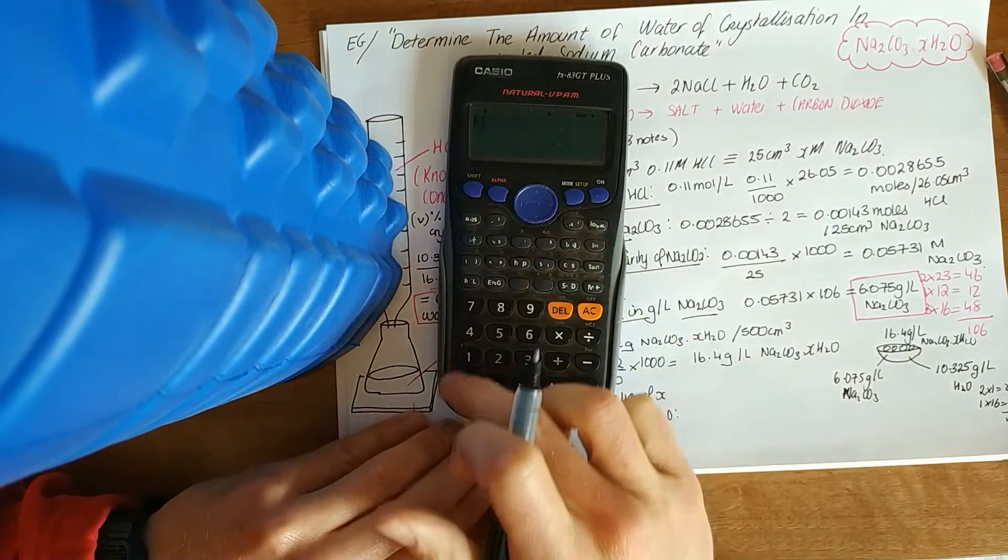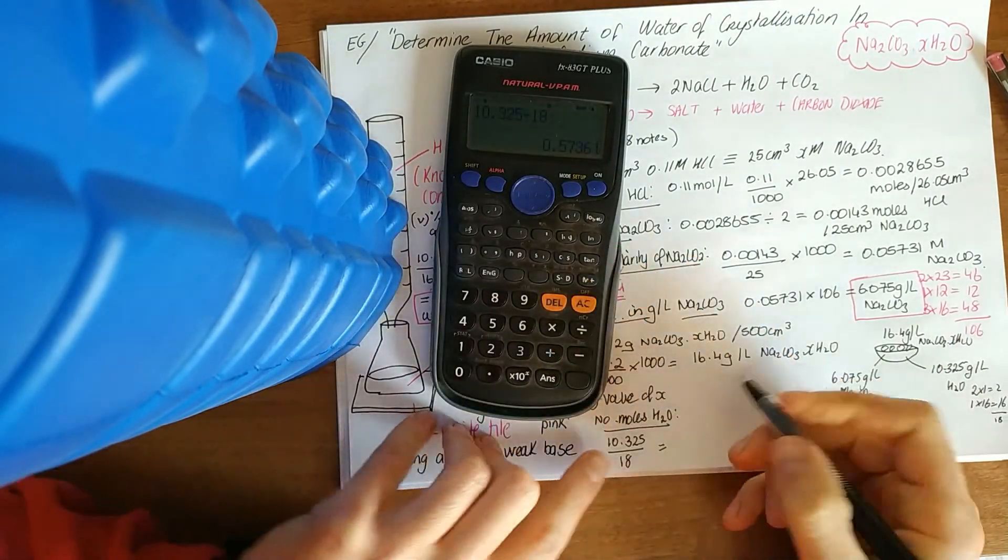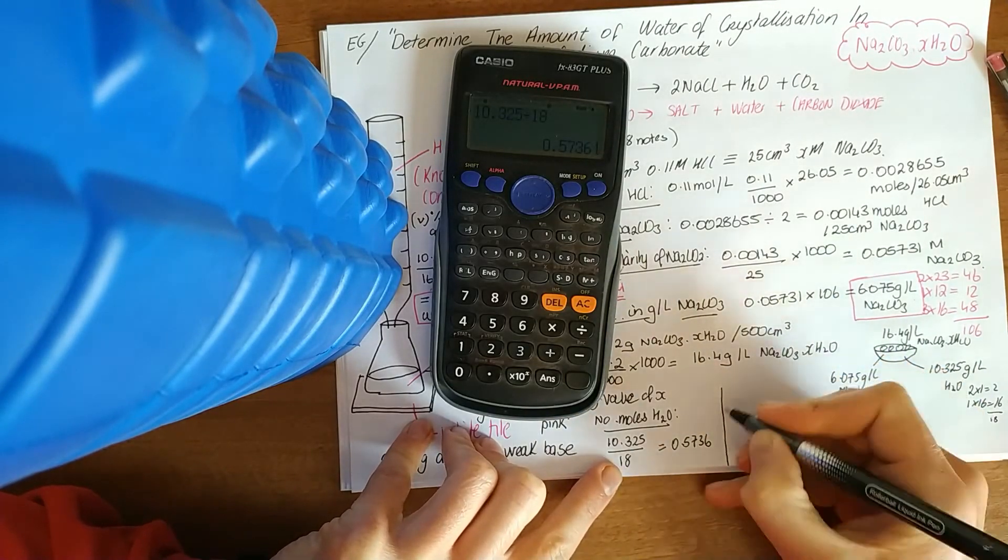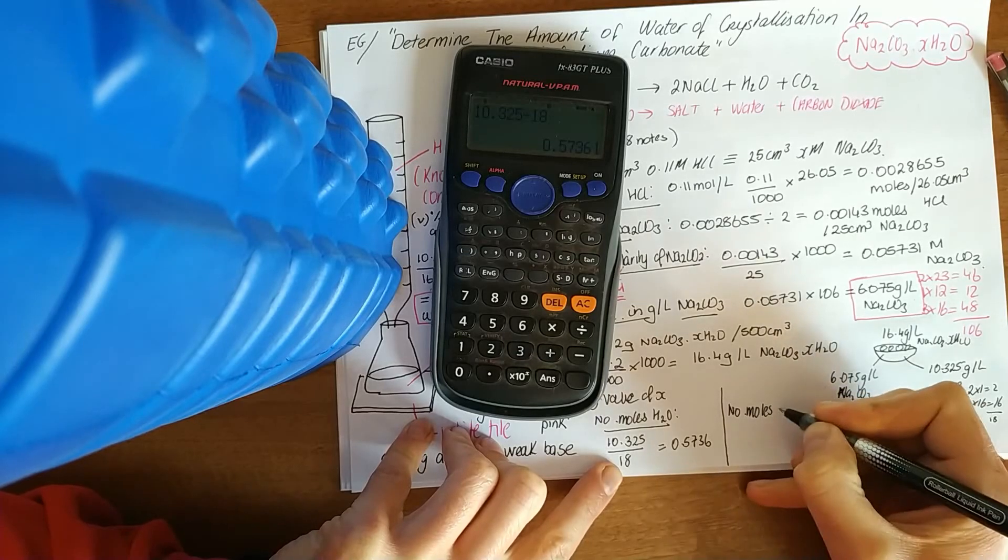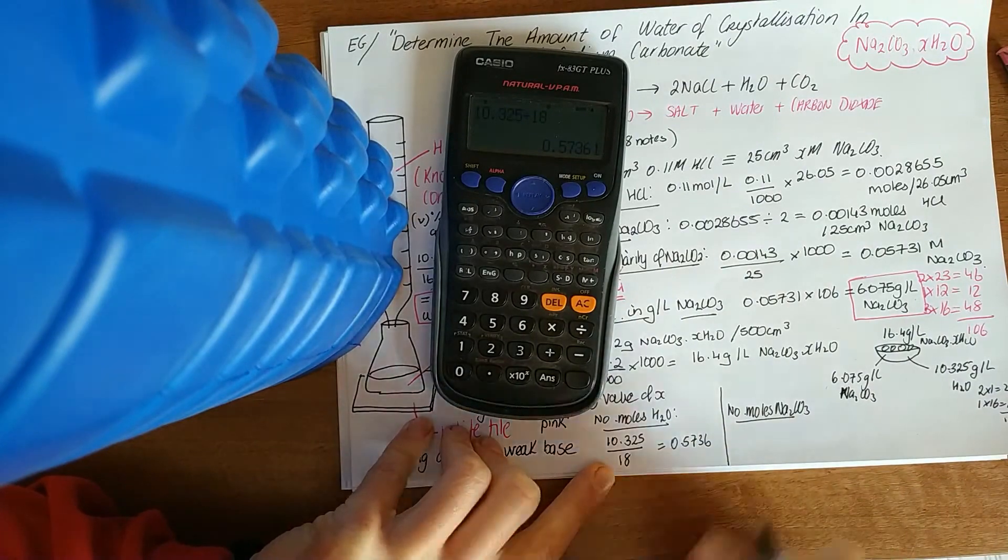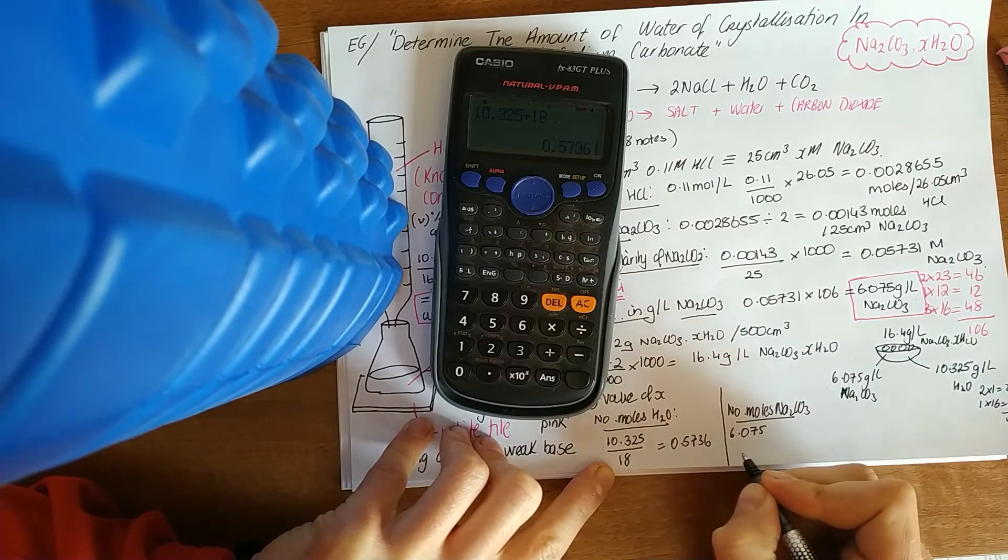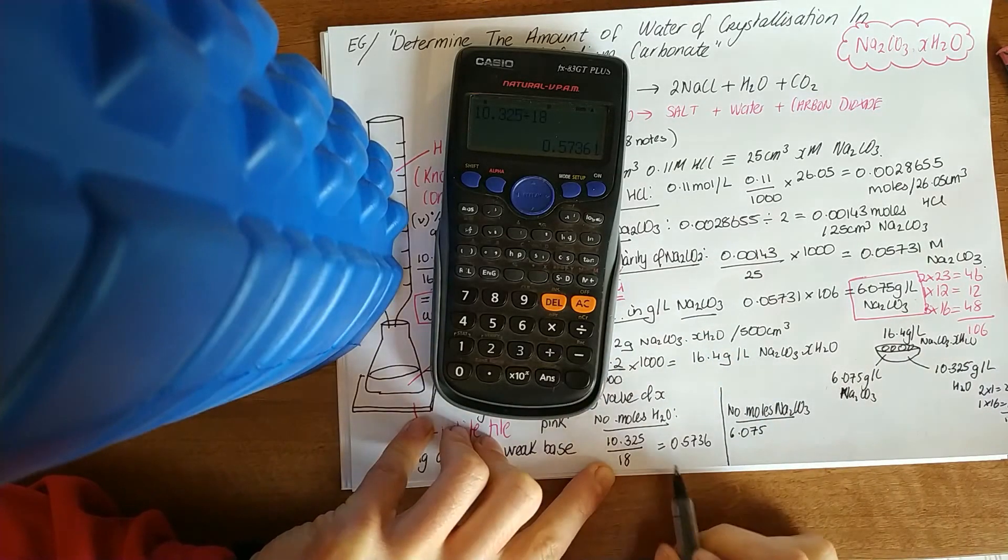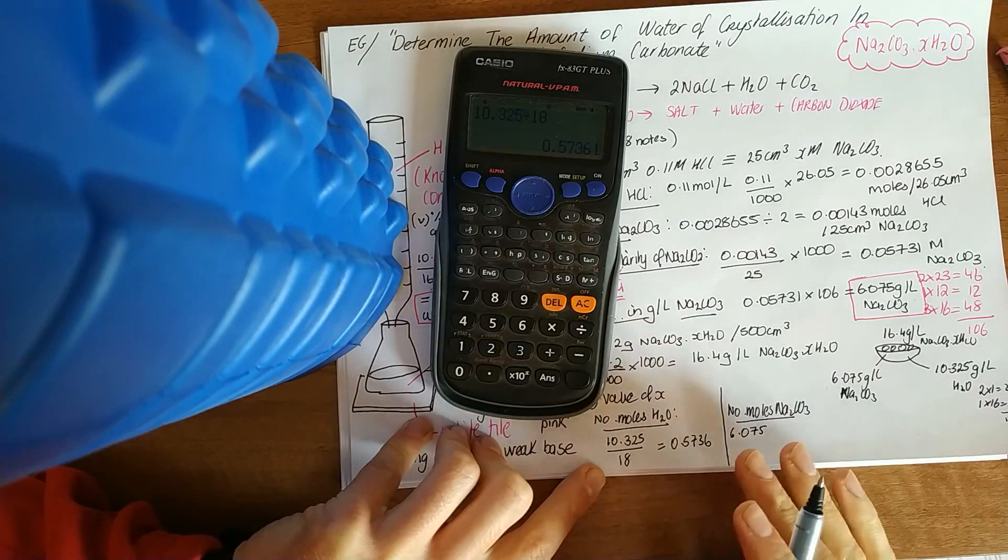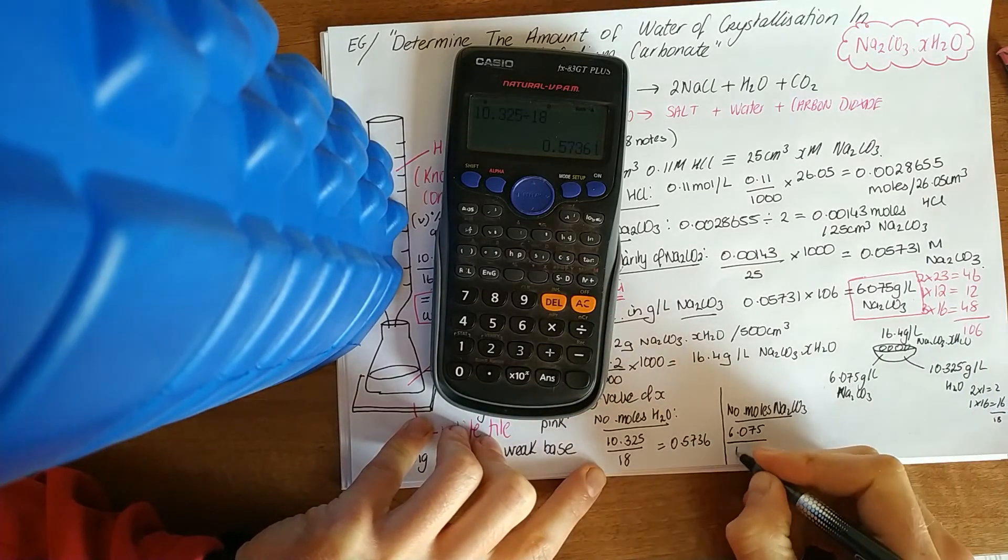So 10.325, and then work out the number of moles Na2CO3. How many grams of this? 6.075. This is like in your stoichiometry, working out the empirical formula. You worked out the percentages in each, and then divide by the smallest to get the whole number ratio.